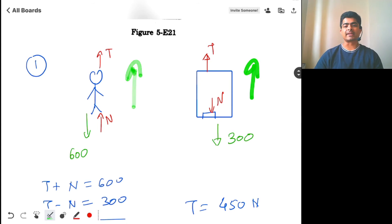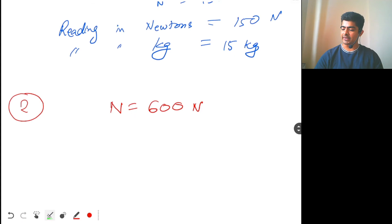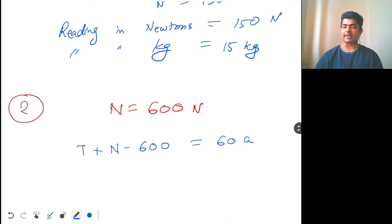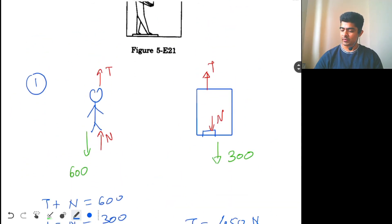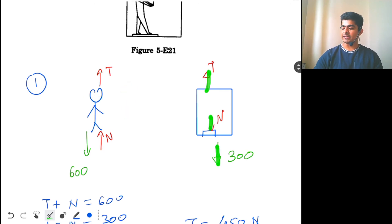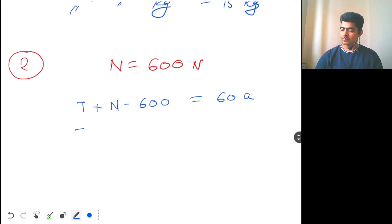For the man: T + N − 600 = 60a. For the box: T − N − 300 = 30a.